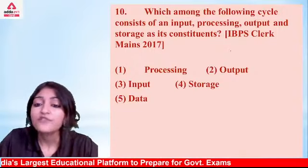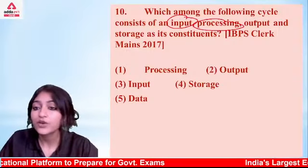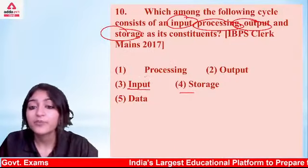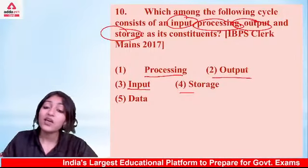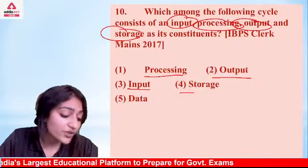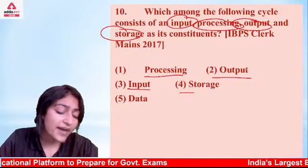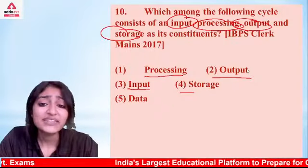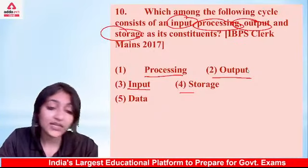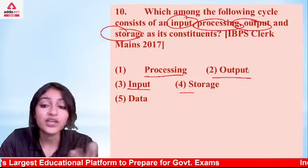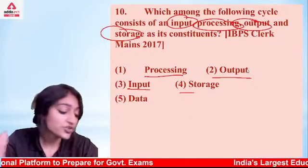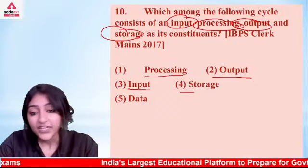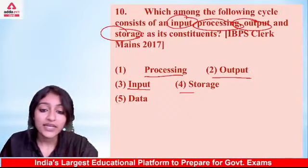Which cycle consists of input, processing, output, and storage? The difference between information and data: data is basically unprocessed — you have it but have not processed it yet. When the computer processes it and converts it, that becomes information. The answer is option number 5 — data is your answer.